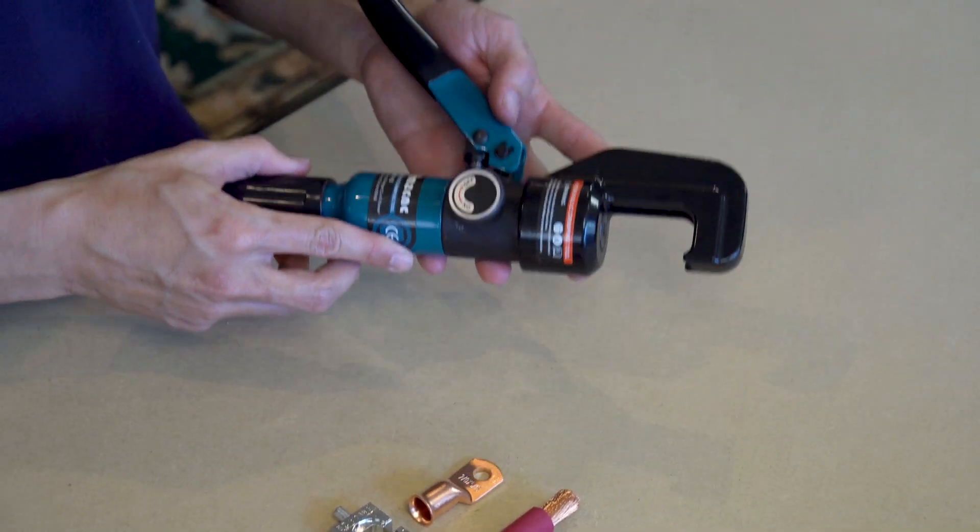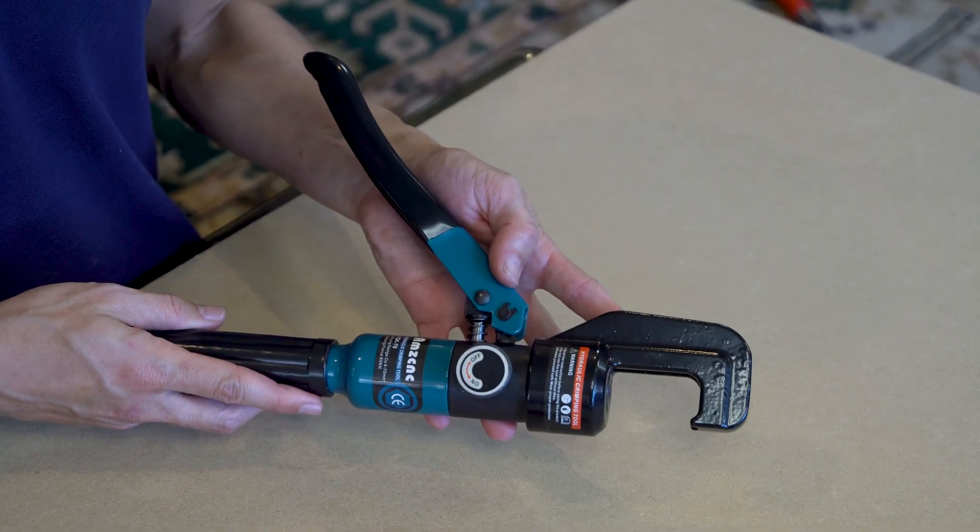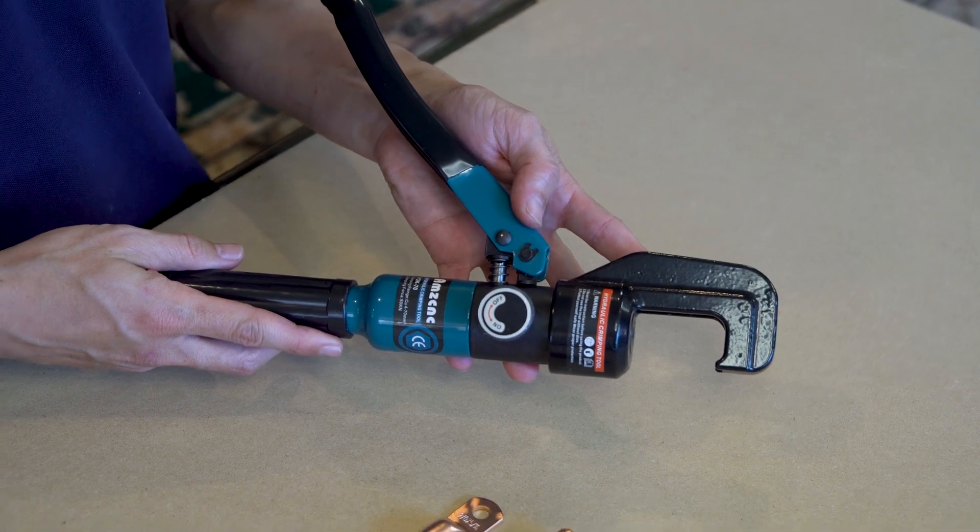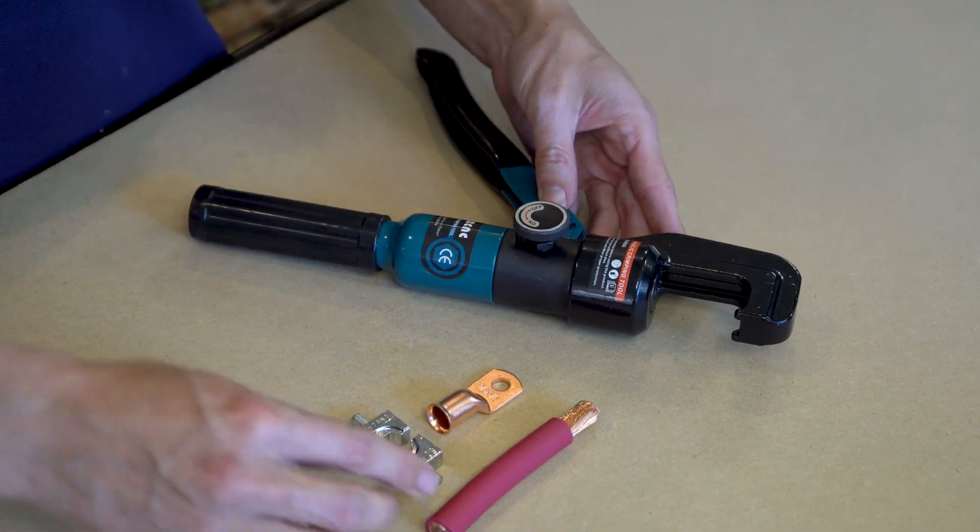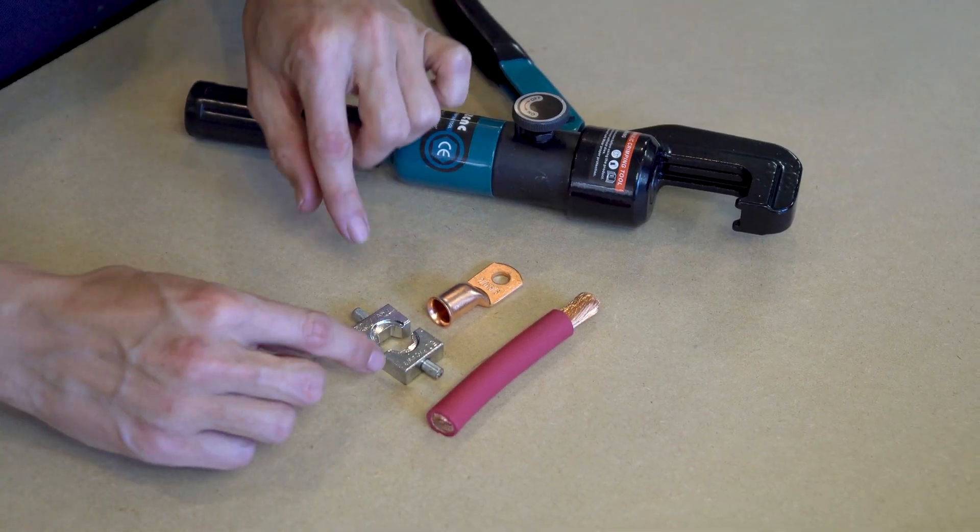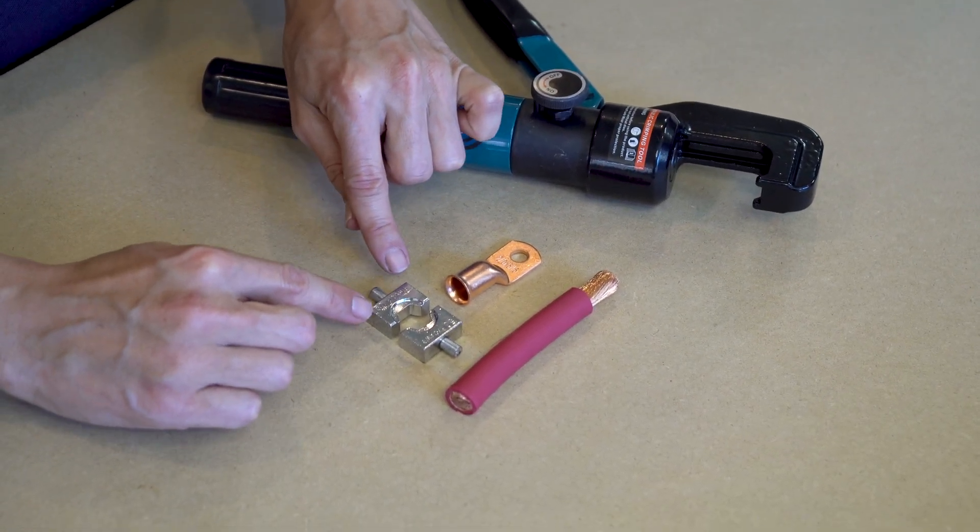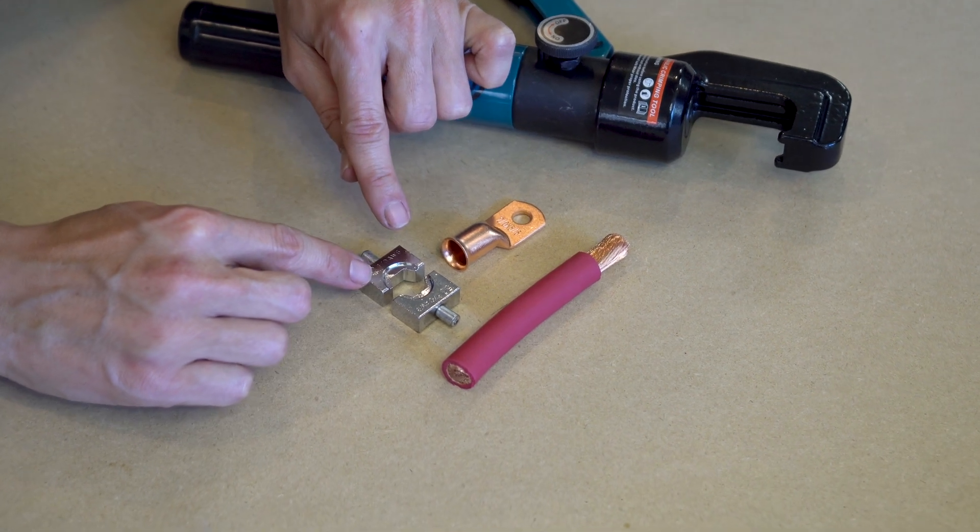Like we mentioned earlier, we really recommend this hydraulic crimper. Virtually anyone can make strong crimps using this device. One important tip if you're working with stranded wire like we are, you'll want to select crimping dies that are one size smaller than your wire gauge.